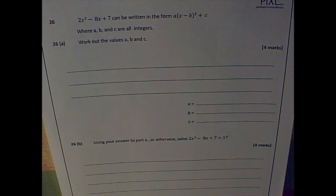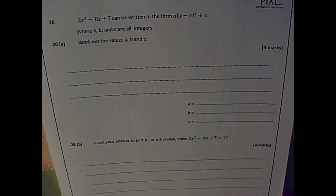Question 26. 2x squared minus 8x plus 7 can be written in the form a brackets x minus b brackets squared plus c, where a, b, and c are all integers. Work out the values of a, b, and c.